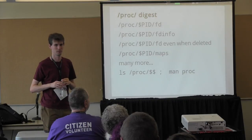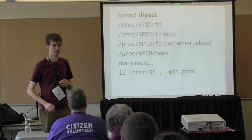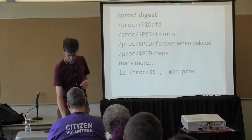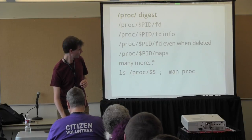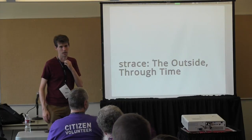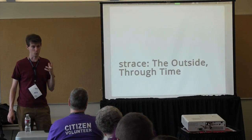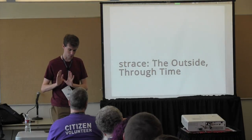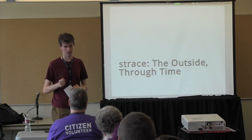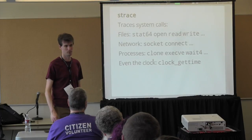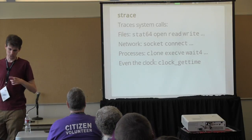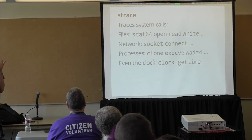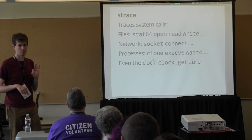Next up is strace. So proc was the outside view at a given moment — it's what the kernel knows right now about this process. Strace is the dual: it will watch the process as it goes and see the changes and new interactions that happen. What strace does is watch all the system calls — every time the process communicates with the kernel, asks the kernel to do something, asks it some question, strace will pick that up and tell you all about it. It also tells you about signals, but that's less often useful.